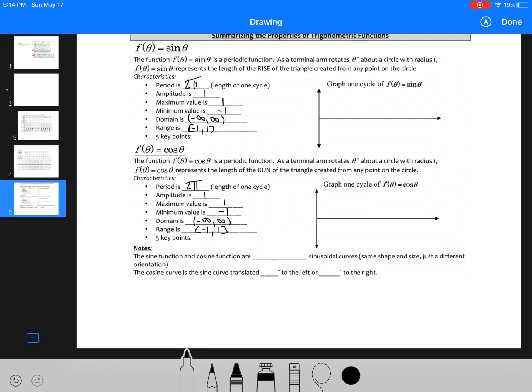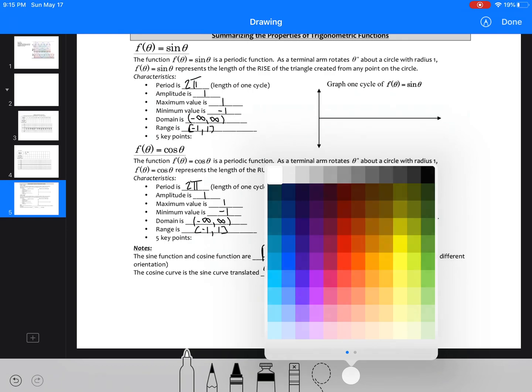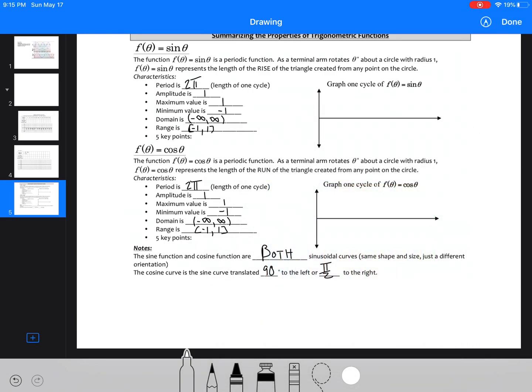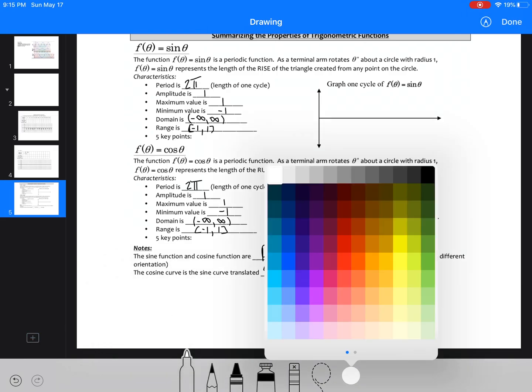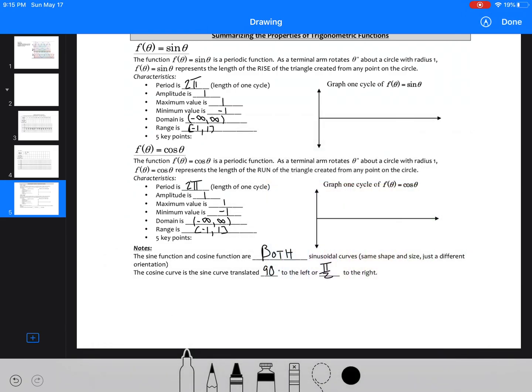So the sine function and the cosine function are identical curves. So they're both sinusoidal curves. The cosine function has just been translated 90 degrees or pi by 2 to the right. So it's moved pi by 2 to the right. We could move it to the left a whole 3 pi by 2, but we're just going to talk about that.